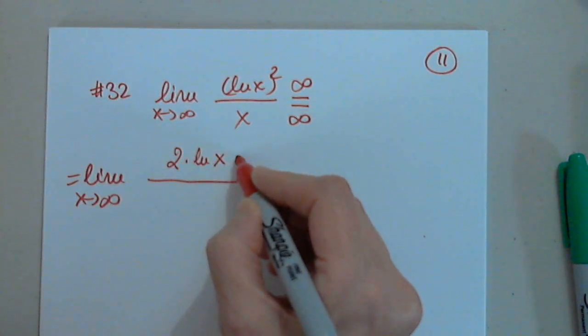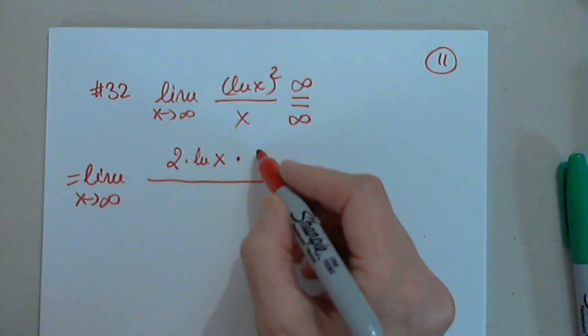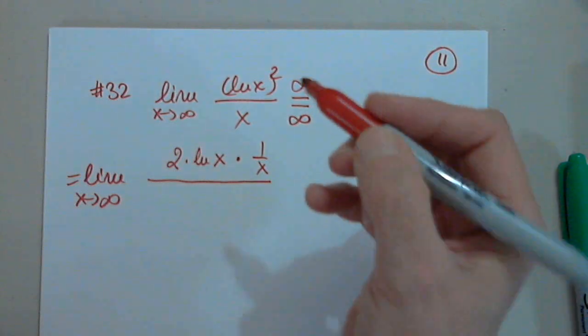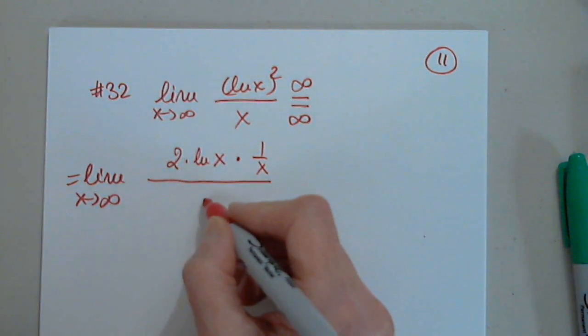2 natural log x times 1 over x. That's it. The denominator prime? 1. Good.